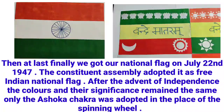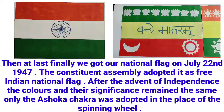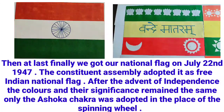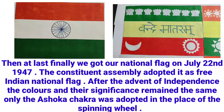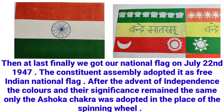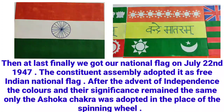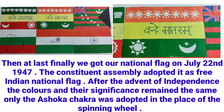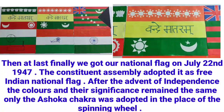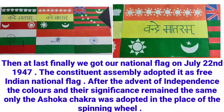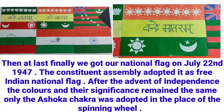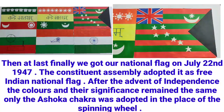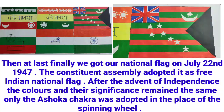Finally, we got our national flag. On July 22, 1947, the Constituent Assembly adopted it as the free Indian national flag. After the advent of independence, the colours and their significance remained the same. Only the Ashoka Chakra was adopted in place of the spinning wheel.